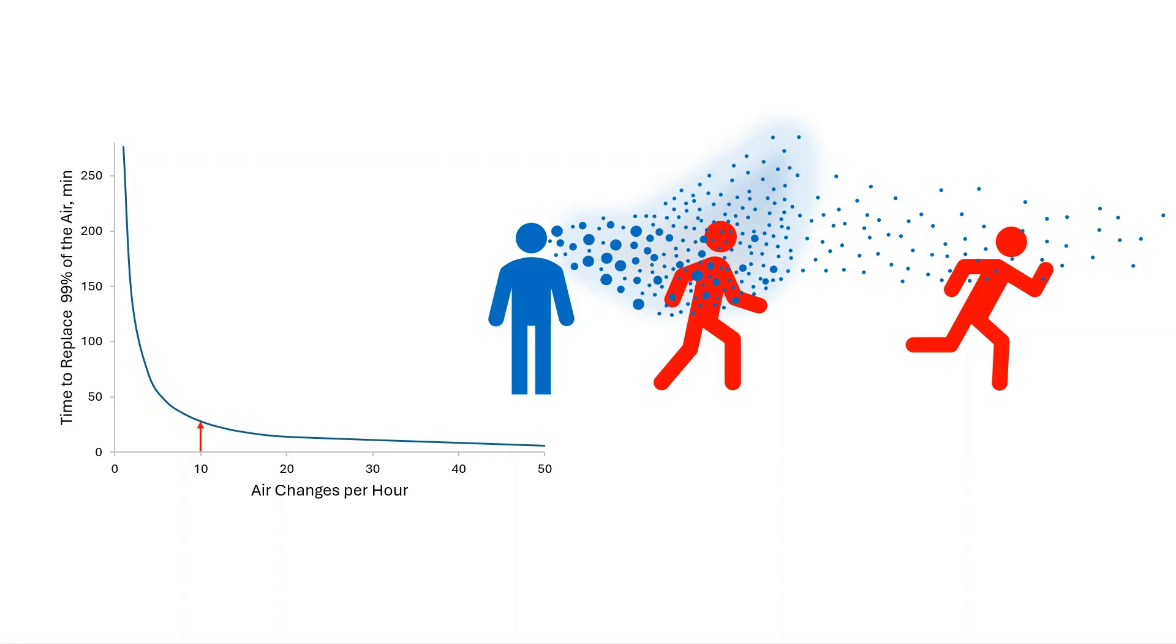Increasing the ACH from 4 to 10 drops this time even further, down to 28 minutes. This more than doubling of the ACH leads to about a halving of the time taken to replace the air. If the ACH is increased from 10 all the way to 50, the time will drop but not as dramatically. This means that after a certain point, the payoff from increasing the ACH is just not as significant.